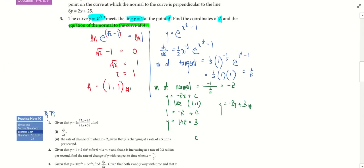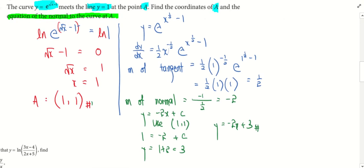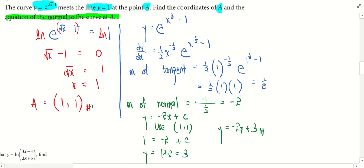So there are 2 things that are required to find. One is the coordinates of A. The other one is the equation of the normal at point A.